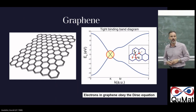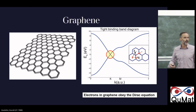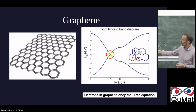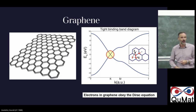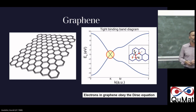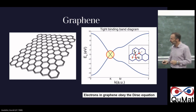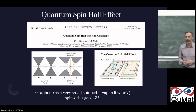If you take graphene and do very basic tight binding calculations, you will find linear bands that cross exactly at the Fermi level — at the K point, one of the corners of the hexagon in the Brillouin zone. These linear bands mean that electrons in graphene obey the relativistic Dirac equation, so they behave like massless Dirac fermions.